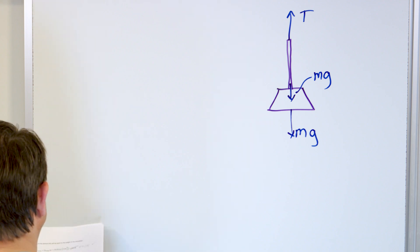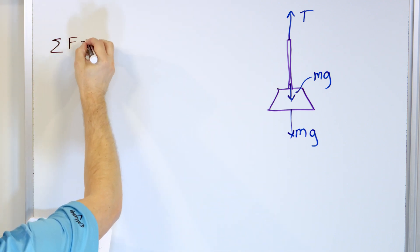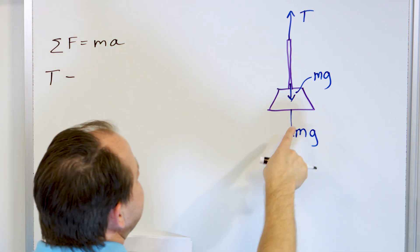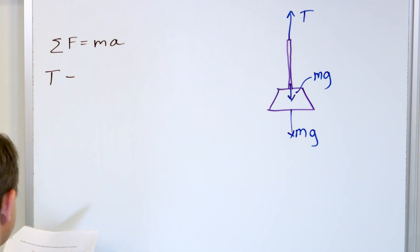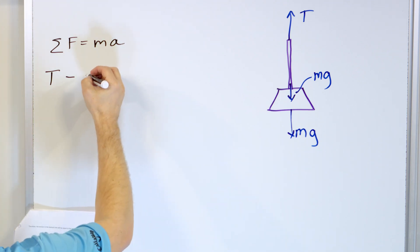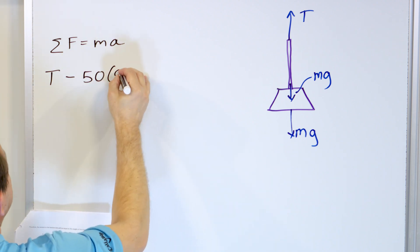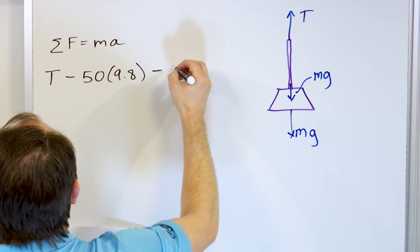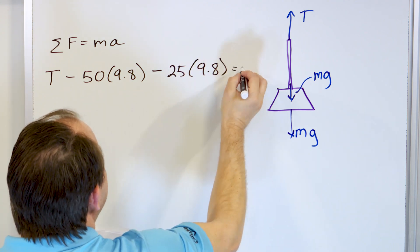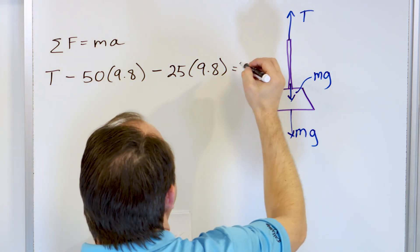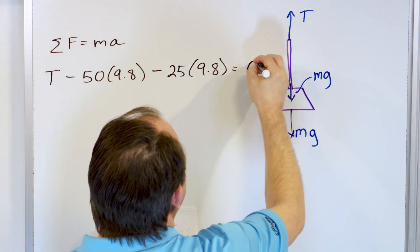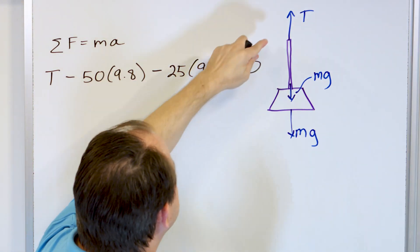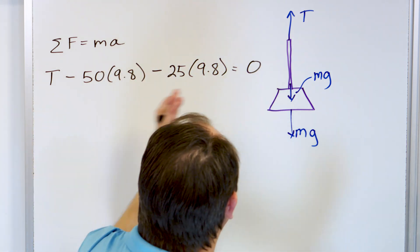The sum of the forces equals mass times acceleration. The upward force is tension T; the downward forces are the mass of the chandelier times gravity — 50 times 9.8 — and the mass of the chain, which is 25 kilograms, times gravity. That equals the total mass of the system times acceleration, but there's no acceleration, so the right-hand side is zero.